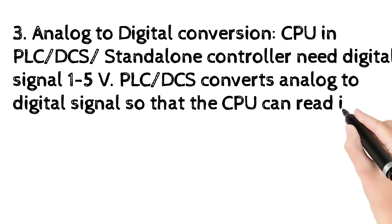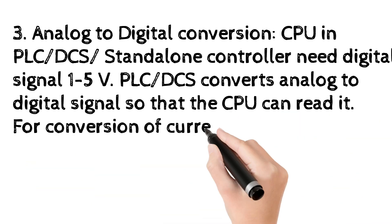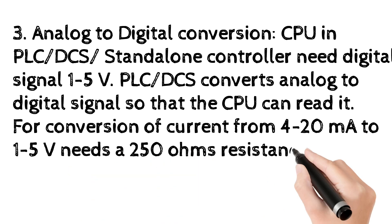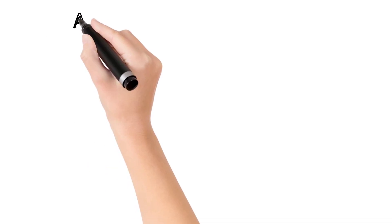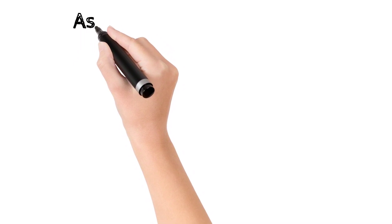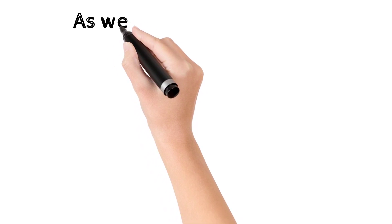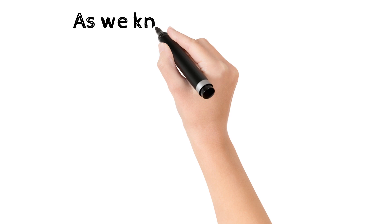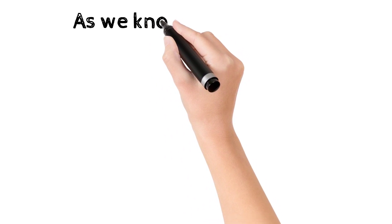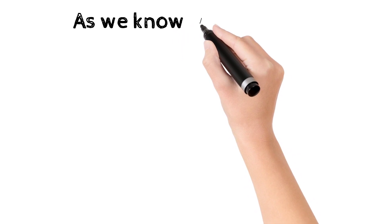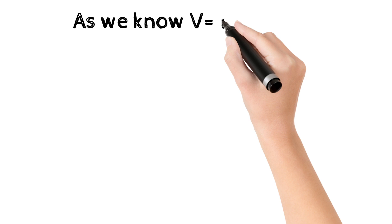For conversion of current from 4 to 20 mA to 1 to 5 volts needs a 250 ohms resistance. As we know, V equals IR. V equals 4 mA by 250 ohms equals 1 volt, 8 mA by 250 ohms equals 2 volts, 12 mA by 250 ohms equals 3 volts, 16 mA by 250 ohms equals 4 volts, 20 mA by 250 ohms equals 5 volts.